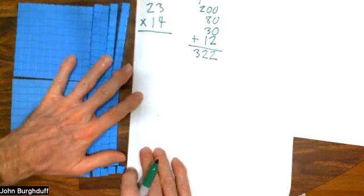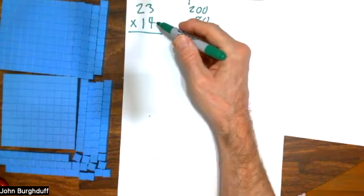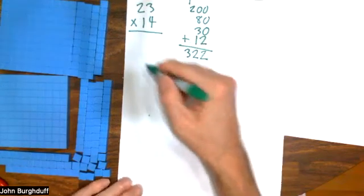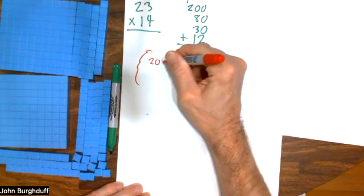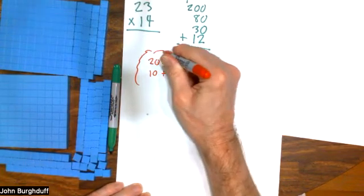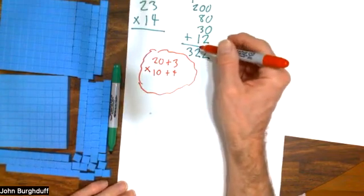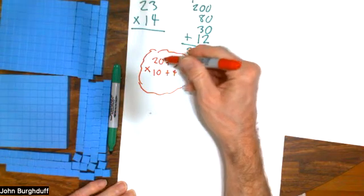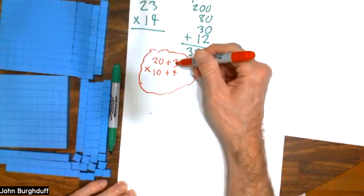Now what I'd like to do is I'd like to go back through this multiplication and show you how the standard algorithm we use for multiplication really is counting blocks. And I think I can convince you of that. If I do a little thinking for a minute, the 23 is 20 plus 3 and the 14 is 10 plus 4. So if I want to multiply these two numbers, what I would just simply need to make sure is that the 4 from the second number gets multiplied by both the 3 and the 20. That's essentially the distributive law. And the 10 from the second number also needs to be multiplied by the 3 and the 20.